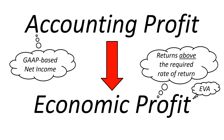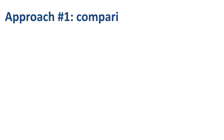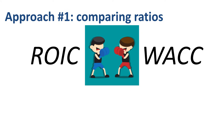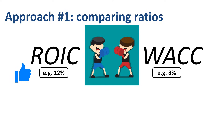If you analyze the performance of a company from the Economic Profit perspective, you can choose between two approaches. The first one is comparing ratios — for example, ROIC versus WACC. ROIC represents the returns generated; WACC represents the required rate of return. If ROIC is 12% and WACC is 8%, then a company creates value. Only returns that exceed the required rate of return are good enough.